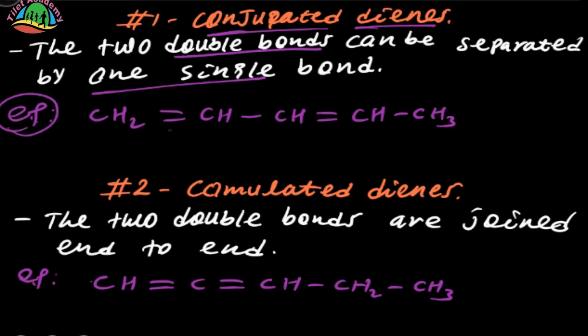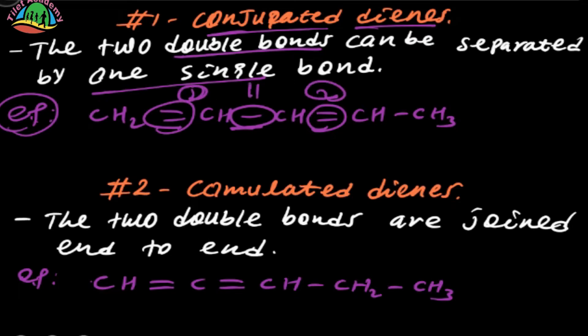For example, we can see here is a double bond, here is a double bond, and here is a single bond between them. When two double bonds are separated by one single bond like this, it is called Conjugated Dynes.